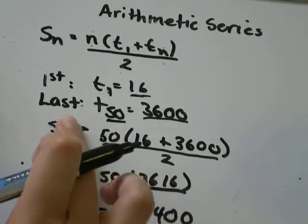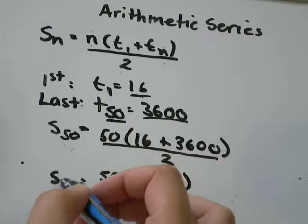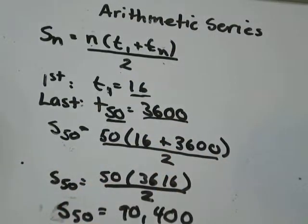I just noticed that for some reason I didn't change my n's up here. So those should all be 50, because we're finding the sum of the first 50 terms.